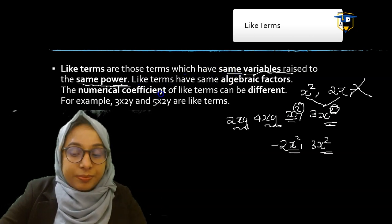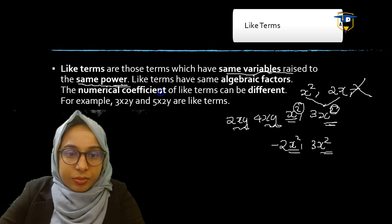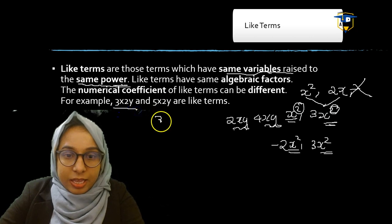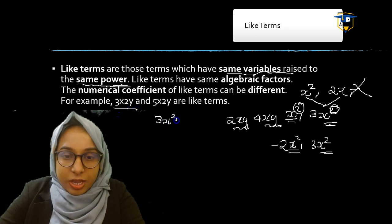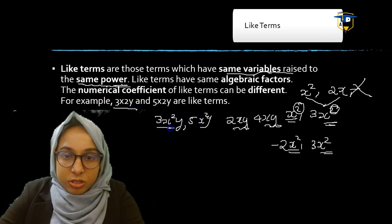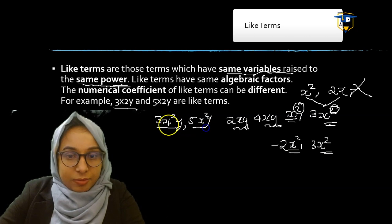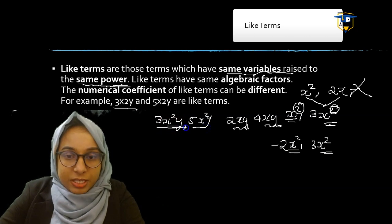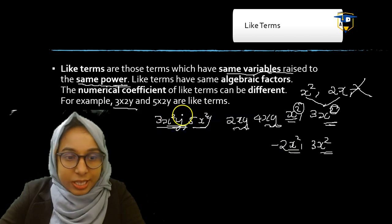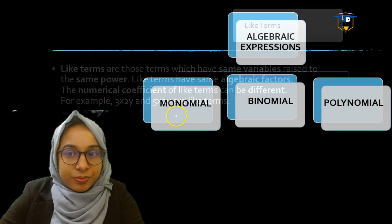You have to remember: same variables AND same power — both conditions must be satisfied for terms to be like terms. For example, 3x squared y and 5x squared y are like terms because the variables and powers are the same.